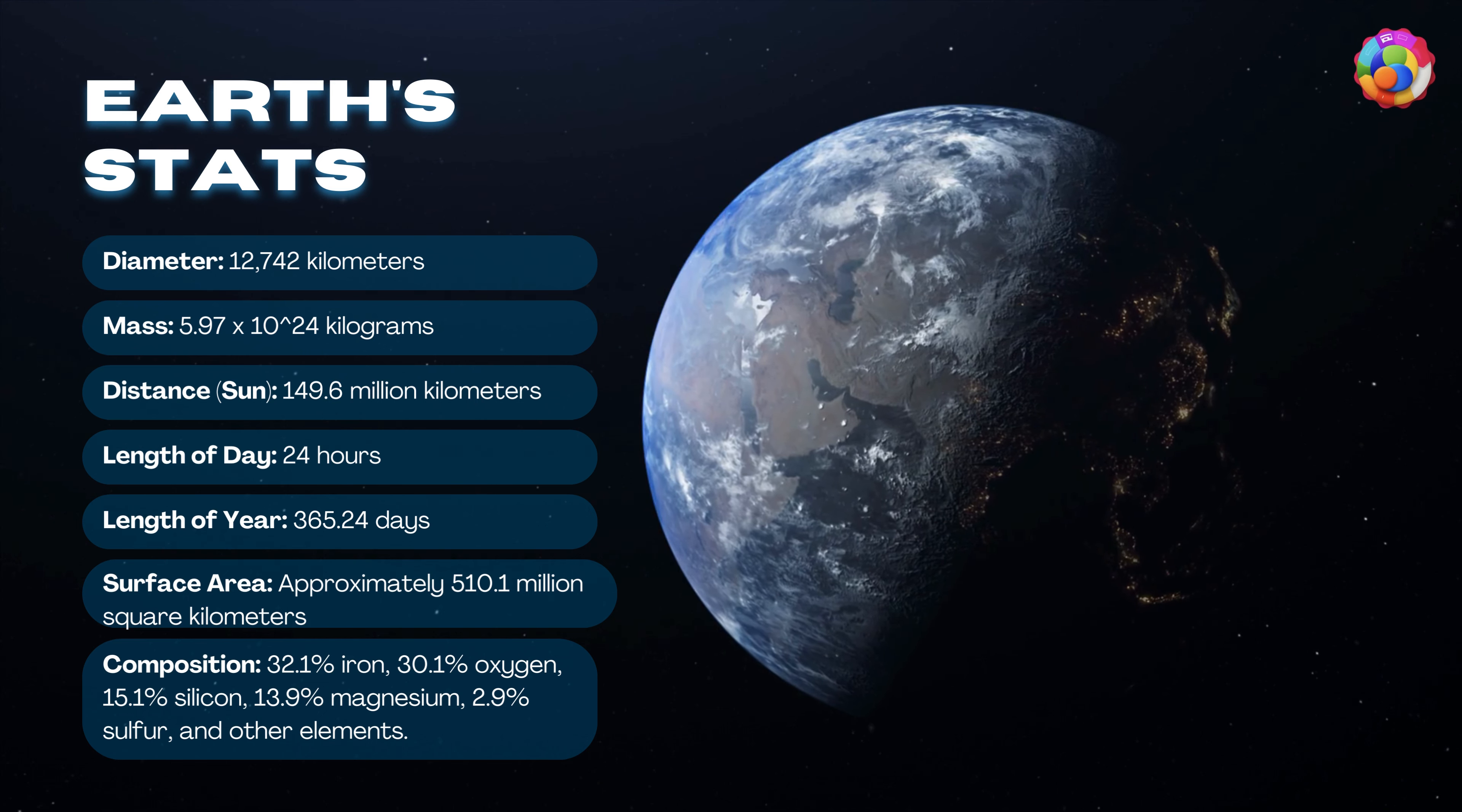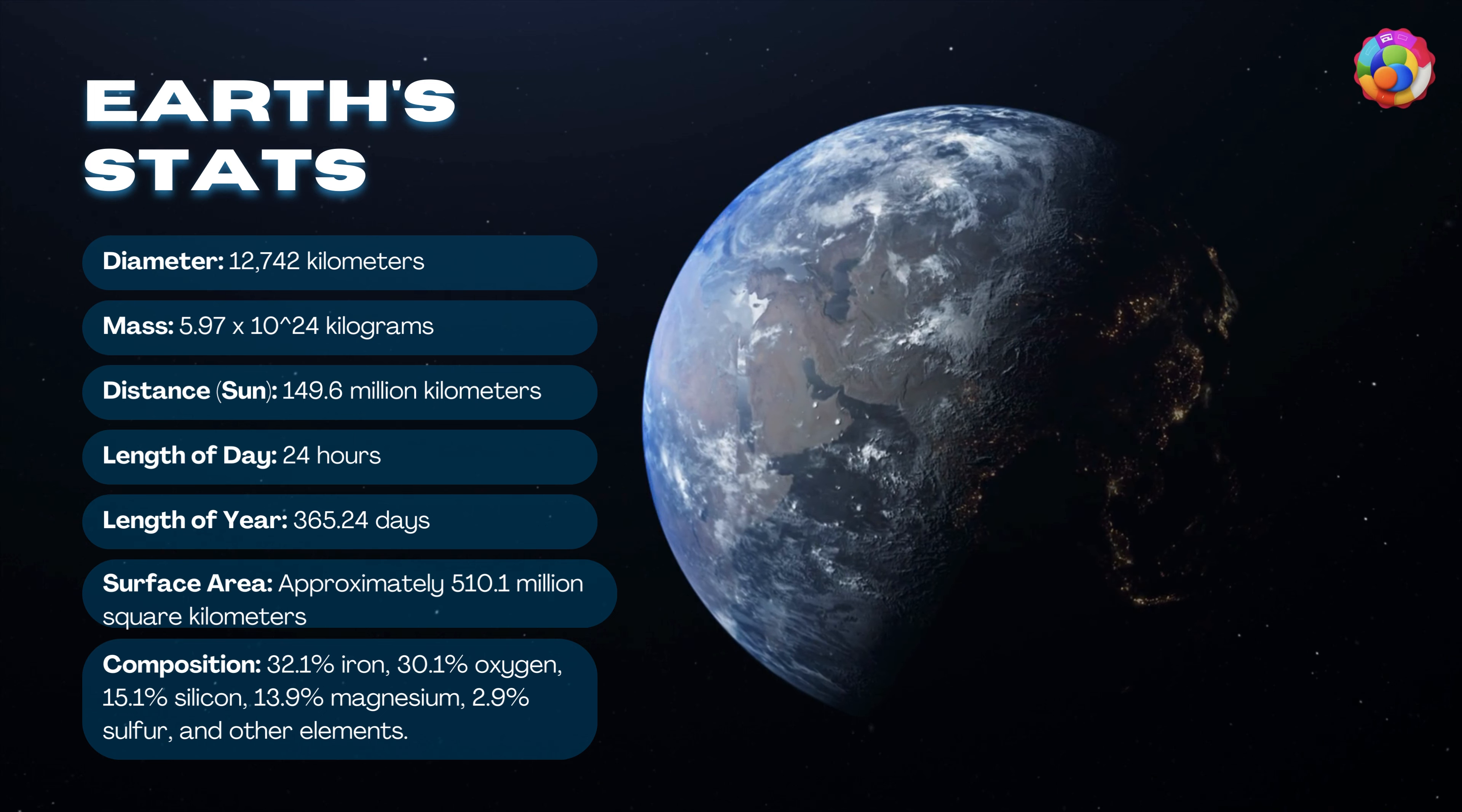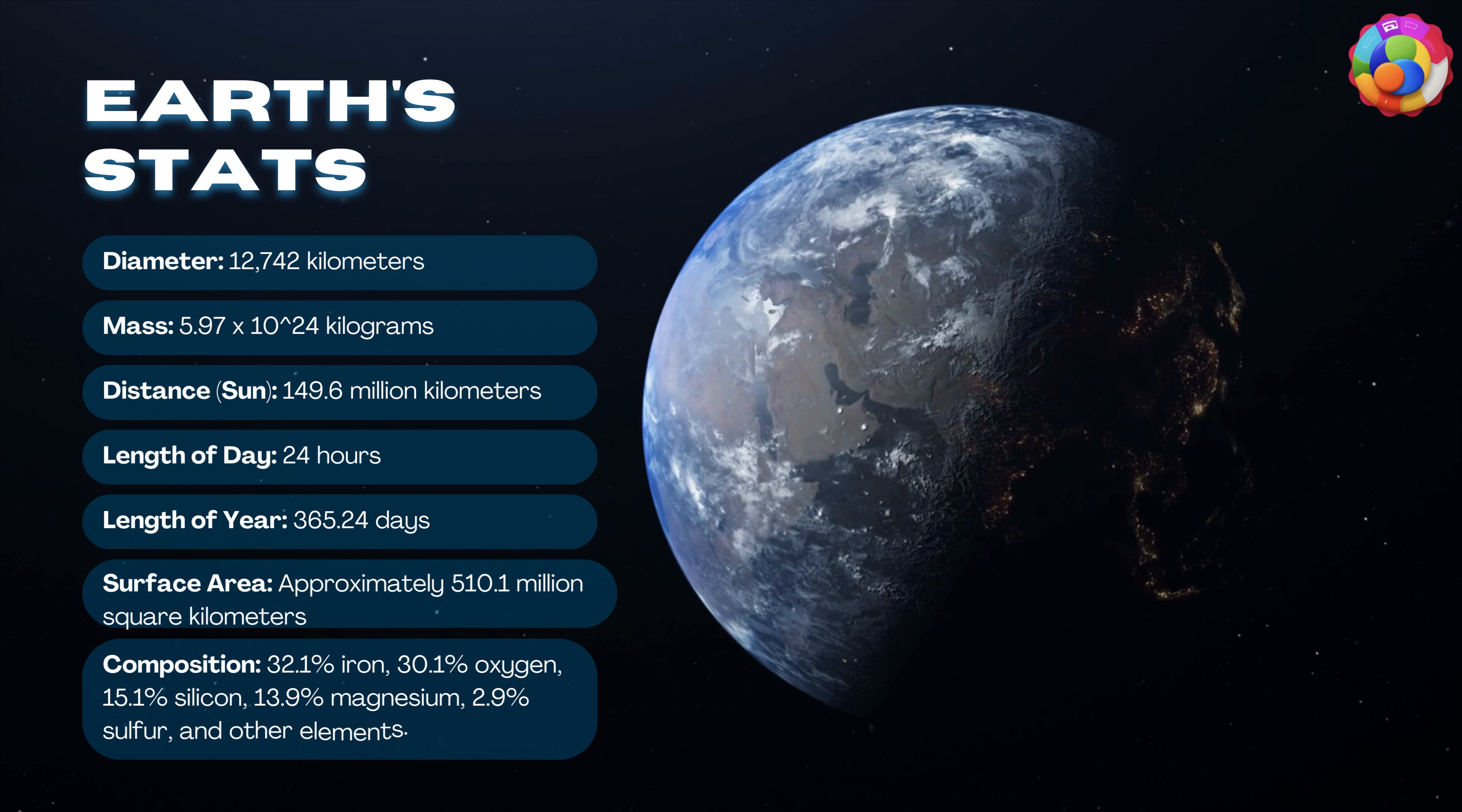Distance from the sun: 149.6 million kilometers. Length of day: 24 hours. Length of year: 365.24 days. Surface area: approximately 510.1 million square kilometers.